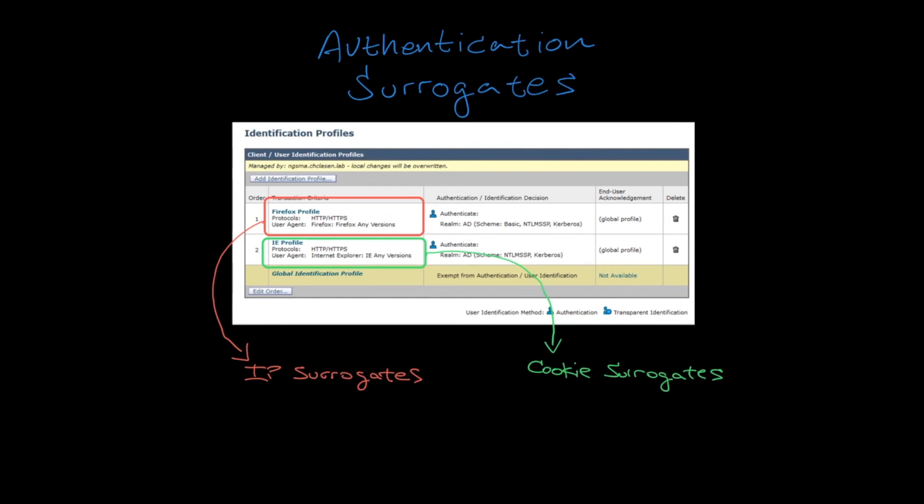However, if the first request is sent by Firefox, the user's IP address will be used as a surrogate, as configured in the first identity. For the duration of the surrogate timeout, even requests sent by Internet Explorer will match the first profile. This is because the source IP address will be evaluated against the list of IP surrogates and matched before any other processing is performed against the request.